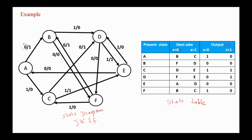If the present state is A and the input X is zero, then the next state is B and the output is one. If the input is one, then the next state is C and the output is zero. If the present state is B and the input X is zero, then the next state is F and the output is zero. If the input is one, then the next state is D and the output is zero. We obtain the remaining entries of the state table in the same manner. Here is the final state table for the given state diagram.